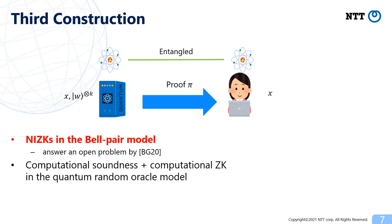The third construction is in the Bell-Pair model, where the prover and verifier share entanglement as a setup. The Bell-Pair model is often regarded as a quantum analog of the common reference string model. Our construction satisfies computational soundness and computational zero-knowledge in the quantum random oracle model. This answers an open question of Broadbent and Grilo who asked if we can construct NIZKs for QMA in the Bell-Pair model.